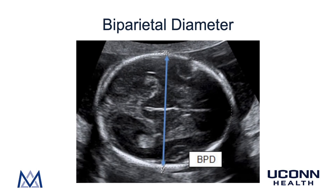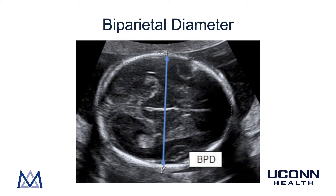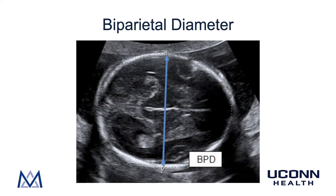The next image shows the biparietal diameter. Again, the image is taken at the level of the parietal bones. The biparietal diameter measurement is taken from the outside of the anterior portion of the fetal skull all the way down to the inside of the posterior part of the fetal skull.